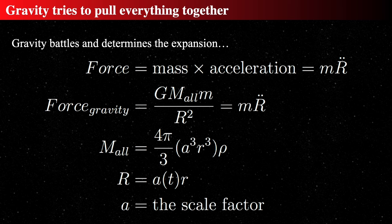We need to say how gravity figures into all this. Gravity says force equals mass times acceleration, so we have mass times R̈ (R double-dot). R̈ is the acceleration — the rate of change of the rate of change of the size. The force due to gravity: we have two things separated by a distance R, with a little mass and a big mass, and that equals the rate of change of acceleration of the small thing — how fast is that distance accelerating?